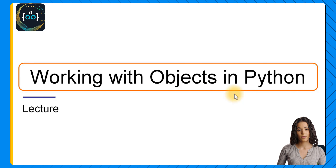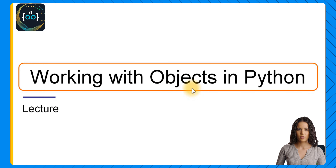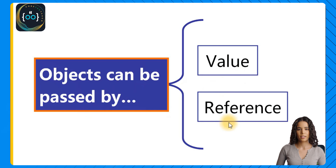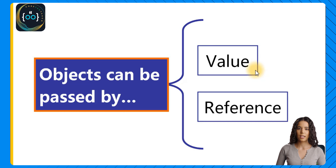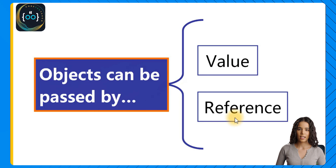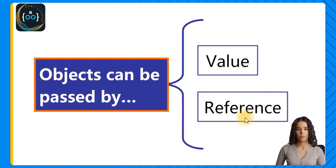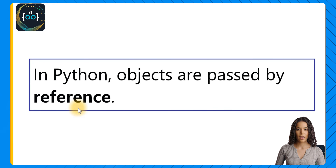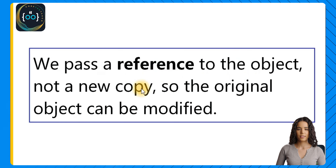Now we will see the internal details of what happens when we pass objects as arguments to functions. In a programming language, objects can be passed by either value or reference. Passing by value means making an entirely new copy of the object when it is passed as an argument. Passing by reference means taking a reference to the object — like a flag of where that object is stored in memory — and if we make modifications while the function is running, those modifications will affect the object directly in memory. In Python, objects are passed by reference.